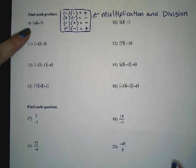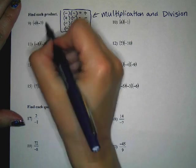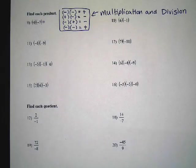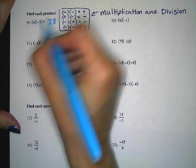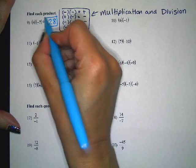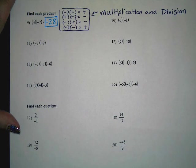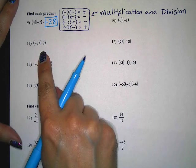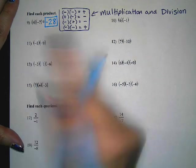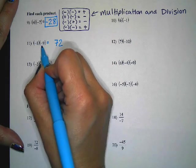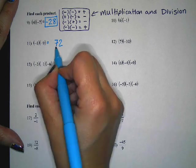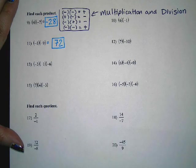On number nine, we have four times a negative seven. Four times seven gives me 28. I have a positive times a negative, so my answer has to be negative — negative 28. On number eleven, negative eight times negative nine: eight times nine gives me 72, and a negative times a negative is always positive, so the answer is positive 72.